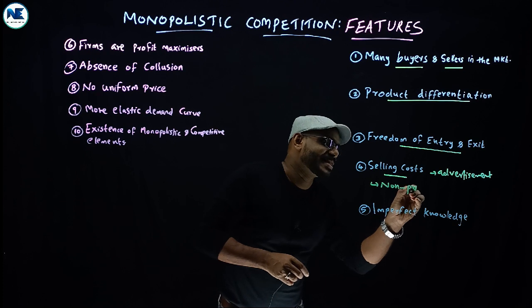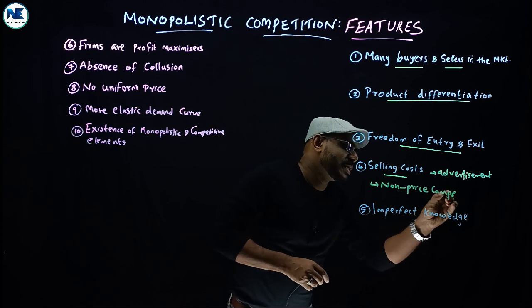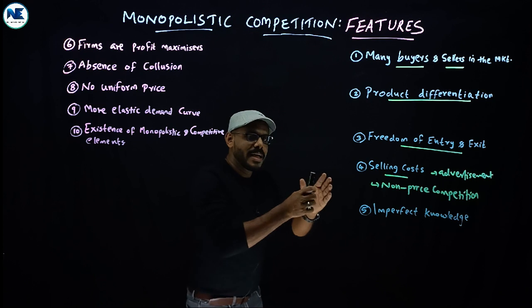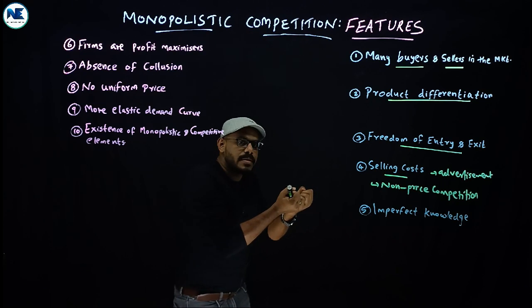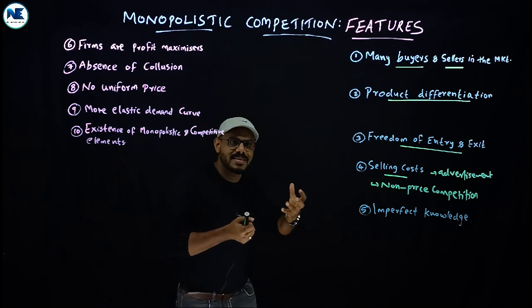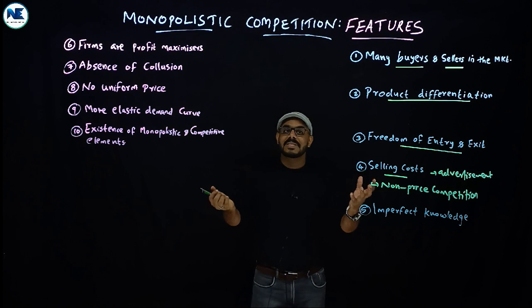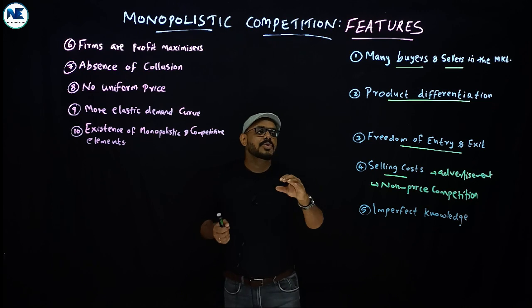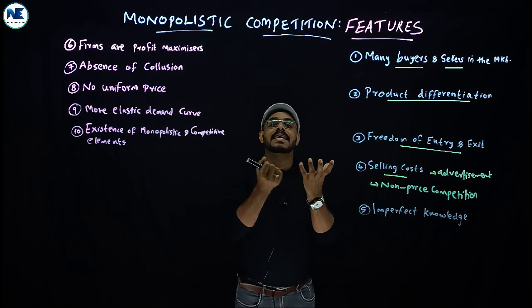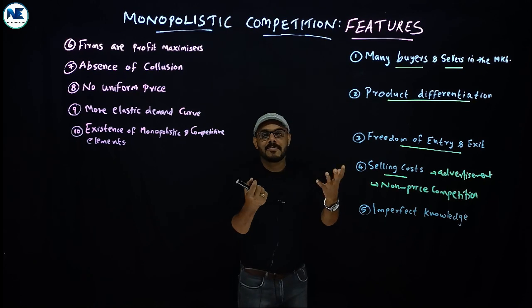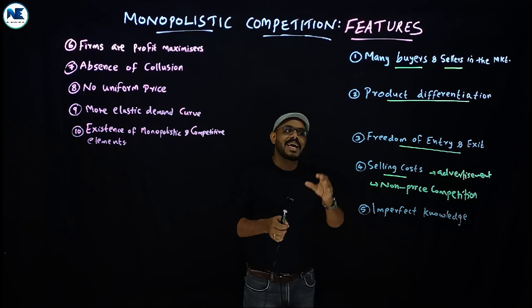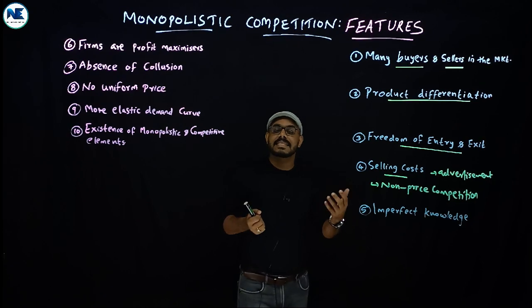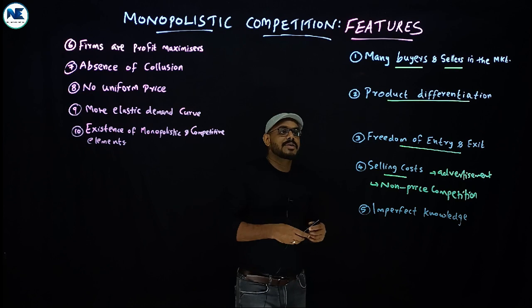The fifth point is non-price competition. Each and every firm is trying to attract more customers. In monopolistic competition, rather than using price reduction, firms use non-price tools like advertisement, guarantees, warranty, free gifts, and discounts. There is also easy freedom of entry and exit with no government restrictions or any other forms of restrictions.